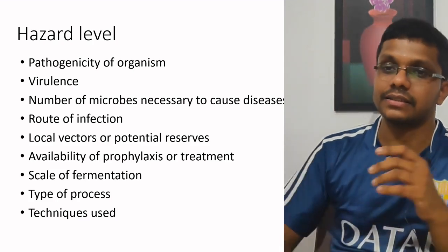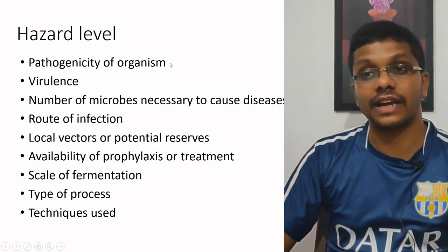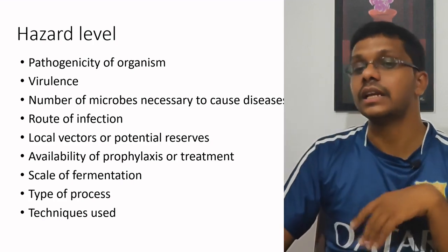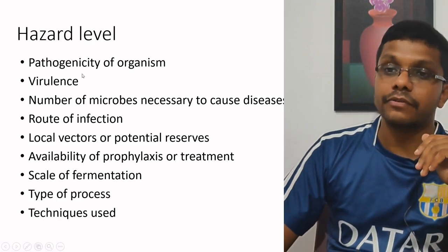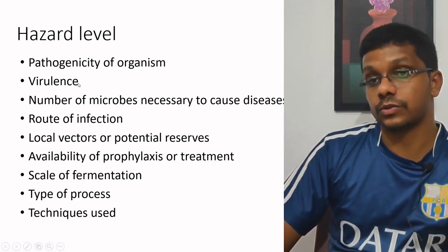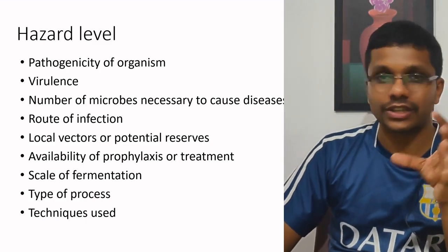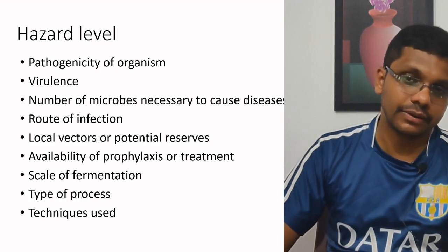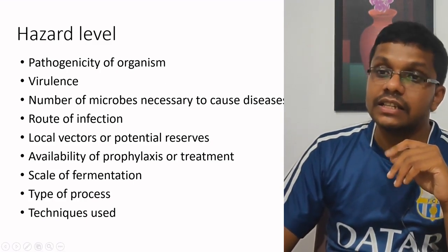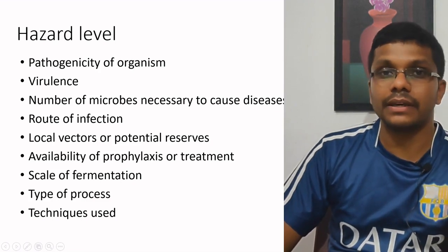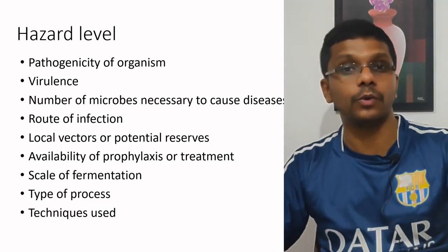Hazard level analysis is based on the following factors. First, pathogenicity of the organism — if highly pathogenic, it is a high hazard level; if not pathogenic, it is a low hazard level. Second, virulence, which is similar to pathogenicity — a highly virulent organism like Ebola virus needs to be contained very strictly. Third, the number of microorganisms necessary to cause disease — some require only 10 or 20 organisms to cause disease, while others require a much greater number.